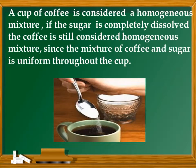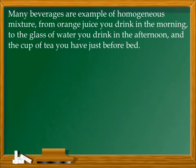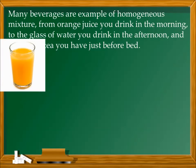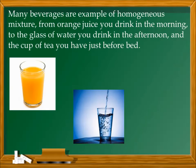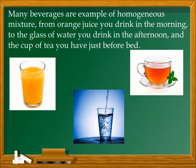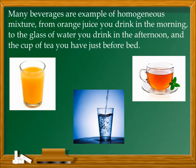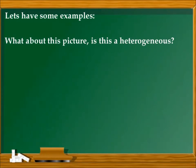A cup of coffee is considered a homogeneous mixture if the sugar is completely dissolved, since the mixture of coffee and sugar is uniform throughout the cup. Many beverages are examples of homogeneous mixtures — from the orange juice you drink in the morning, to the glass of water in the afternoon, and the cup of tea before bed.